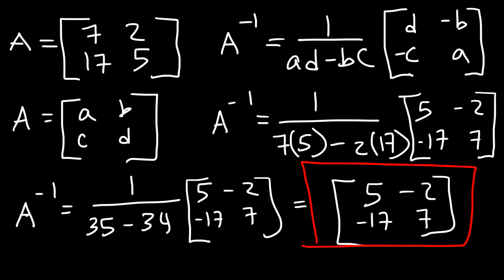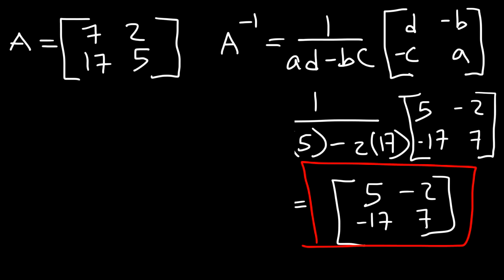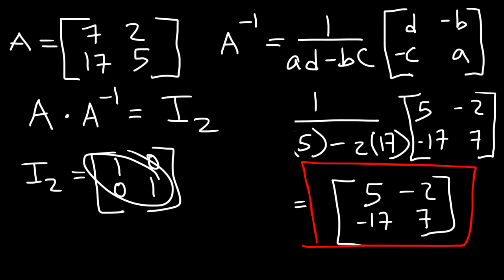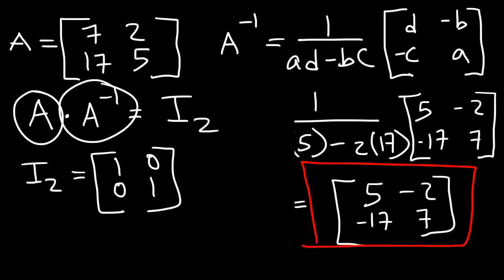That's a quick and simple way to determine the inverse of a 2 by 2 matrix. To confirm this is indeed the inverse: just as 5 times its reciprocal 1 over 5 gives you 1, if you take matrix A and multiply it by its inverse it will give you the identity matrix I2. That identity matrix looks like 1, 0, 0, 1 — the main diagonal contains 1s. If we multiply A by the inverse of A and get that result, it confirms this is the multiplicative inverse.